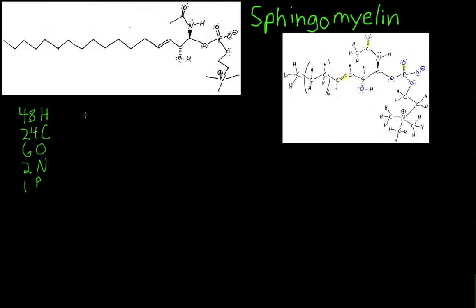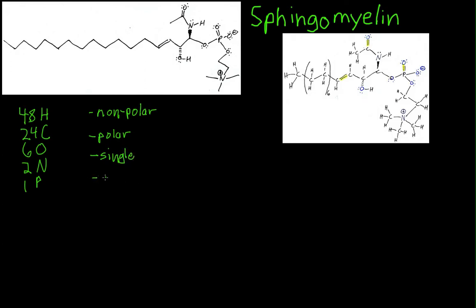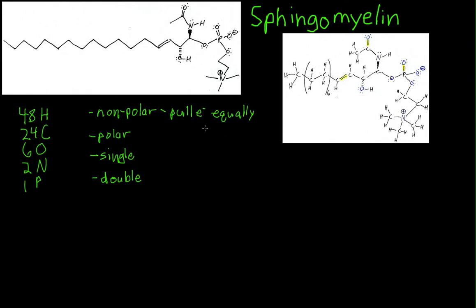A nonpolar bond is when two atoms pull electrons about equally. This means that the two atoms in question have a similar electron affinity or similar electronegativity. An example of this is the carbon-carbon bond, like right here, or the carbon-hydrogen bond, like right here.